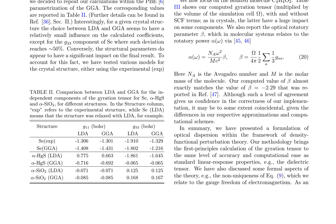The authors also discuss formal aspects of the theory, including the non-uniqueness of the equation for the gyration tensor, which is related to the gauge freedom of electromagnetism. The calculations are performed using a formulation of optical dispersion within the framework of density functional perturbation theory, bringing first principles calculation of the gyration tensor to the same level of accuracy and computational ease as standard linear response properties. The optical rotatory parameter equation relates to rotatory power via a formula involving the Avogadro number and molar mass. The results are presented in tables and discussed in detail, providing a clear understanding of the calculations and their implications.